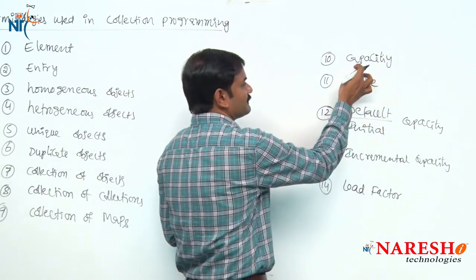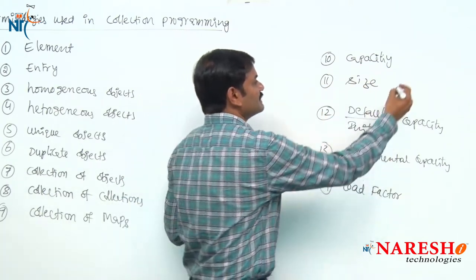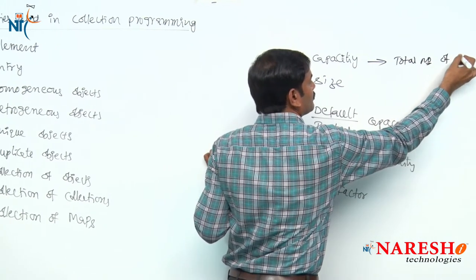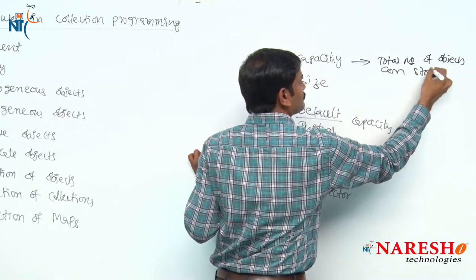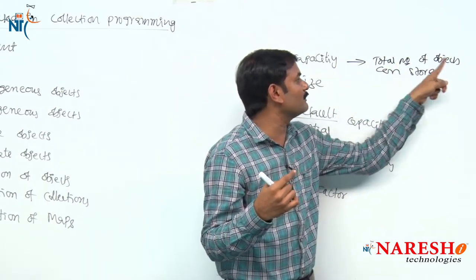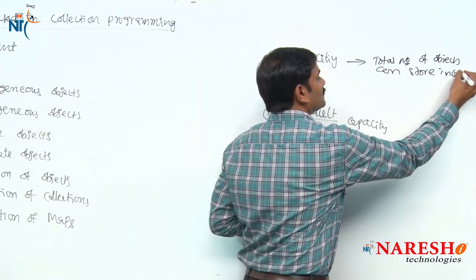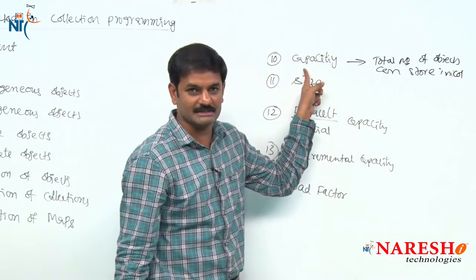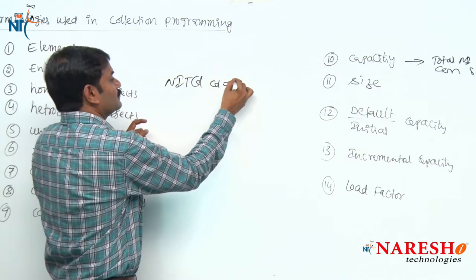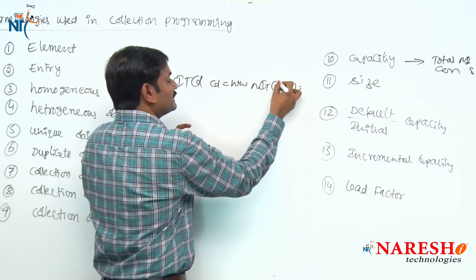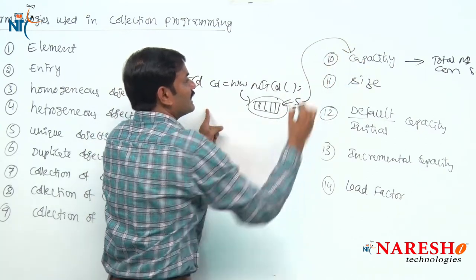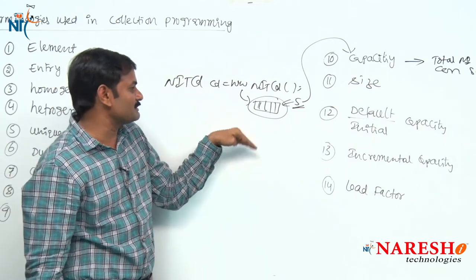Tell me — do you already know the difference between capacity and size? Capacity means the total number of objects that can be stored. Capacity is one int number that represents the total number of objects that can be stored in a collection. When I create a collection object — for example, new NitCollection — internally it creates an array object with 5 locations. That 5 is what we call capacity.